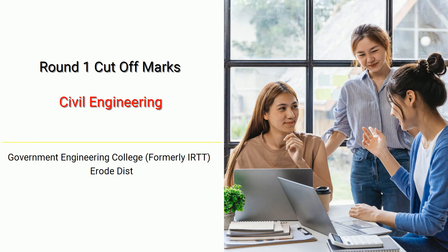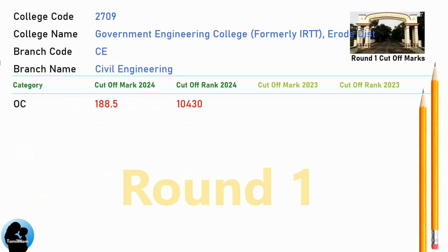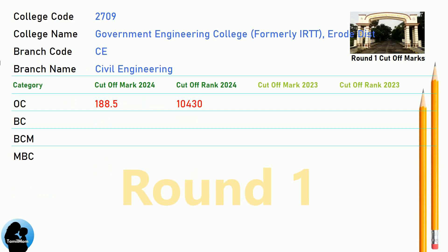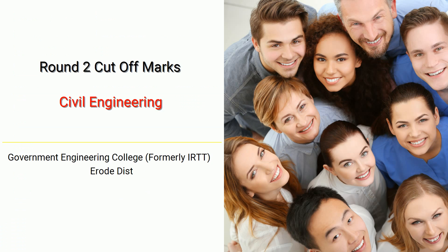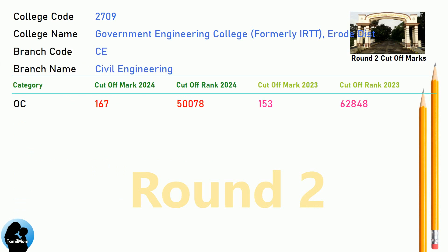DNEA 9.5 Reservation Cut-Off for Government Engineering College, formerly IRTT, Erode District in Civil Engineering. DNEA 9.5 Reservation Cut-Off for Government Engineering College, formerly IRTT, Erode District in Civil Engineering.